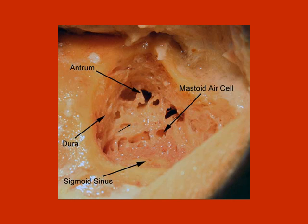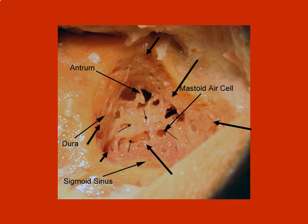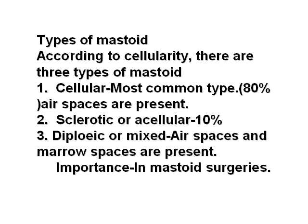The defined cells are: tip cells, perisinus cells, retrofacial cells, sinodural cells, tegment cells, zygomatic cells, and central cortical cells. The types of mastoids according to cellularity are three: cellular, sclerotic, and diploic. Cellularity is of importance in mastoid surgeries.